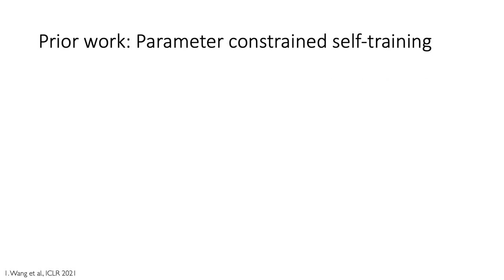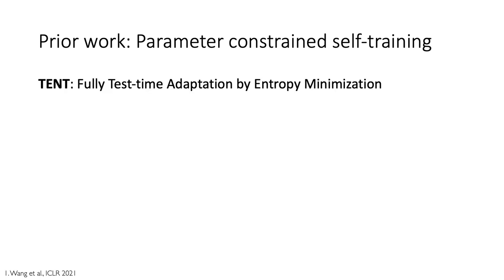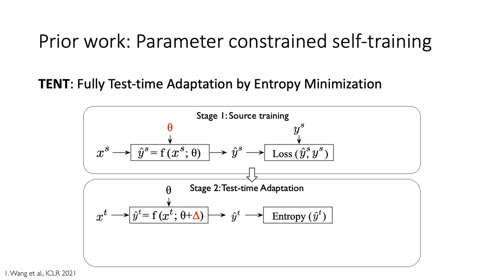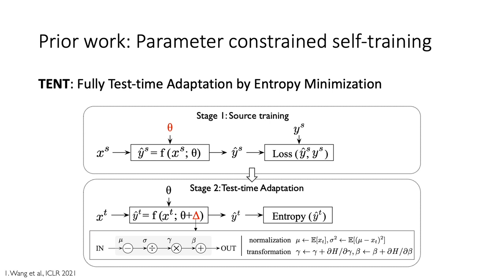There is prior work using parameter-constrained self-training. A popular recent method called TENT — test-time adaptation by entropy minimization — first performs regular source training where all model parameters theta are updated to learn the task using labeled source data. In the second test-time adaptation phase, they only update a subset of model parameters to minimize predictive entropy on target data without source data access, while keeping all other parameters frozen. In practice, the parameter subset that works best is to update the model's batch normalization parameters while keeping everything else frozen. This method does well at preserving task performance and improving it on target data without source access.